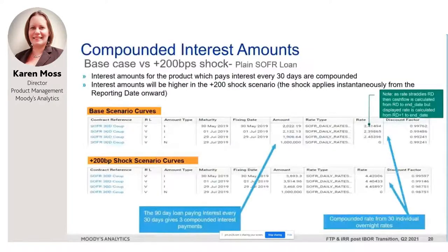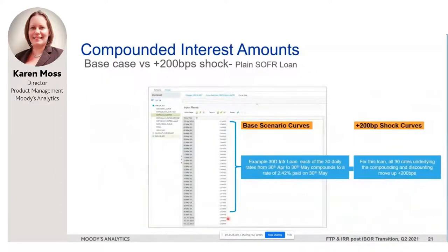We have three coupon rates for the plain SOFR loan in the base scenario, which have gone up in the shock scenario. The first coupon rate is 2.42 percent. To show how that's derived — if you recognize that standalone index of daily rates, each of the 30 daily rates from the 30th of April to the 30th of May have been compounded up to that rate of 2.42 percent paid on the 30th of May, and all 30 rates underlying the compounding and discounting move up that full two percent shock.